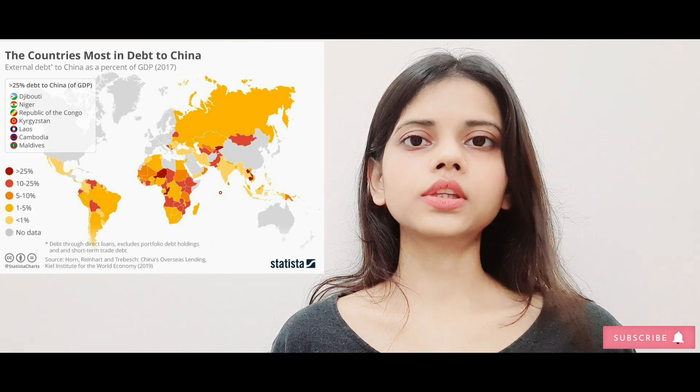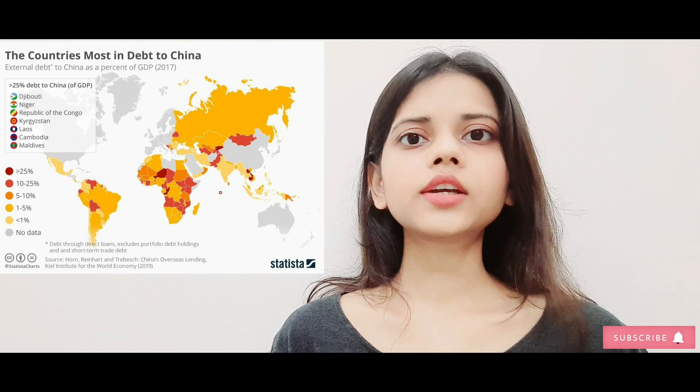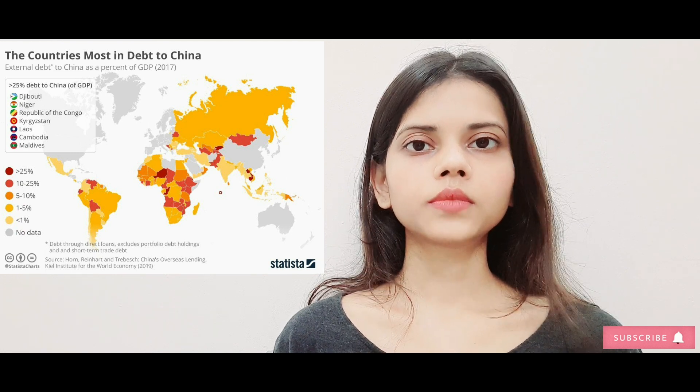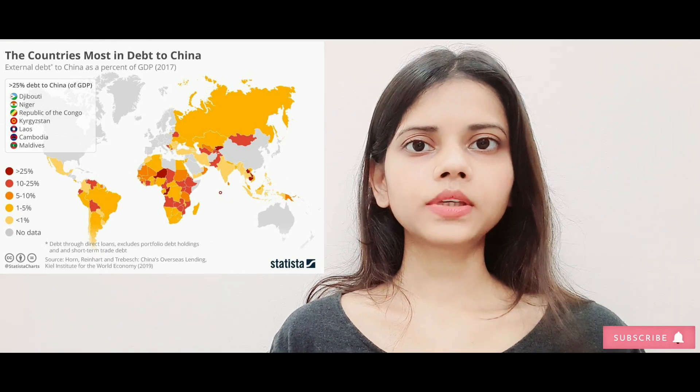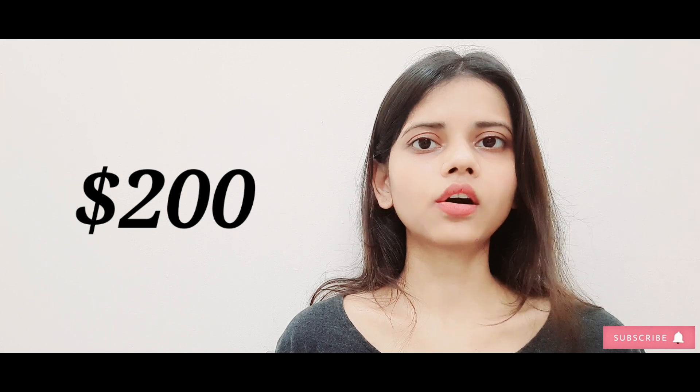The top seven most indebted countries are Djibouti, Niger, Congo, Kyrgyzstan, Laos, Cambodia, and Maldives. Other heavily indebted countries include Tonga, Zambia, Samoa, Vanuatu, and Mongolia. Notably, China accounts for about 50 percent of loans to these nations. Unreported lending is estimated at $200 billion USD, based on 2016 data.